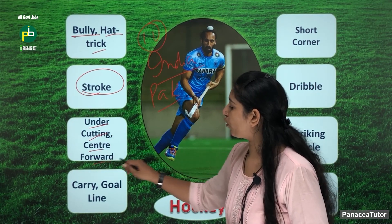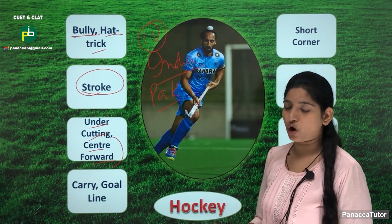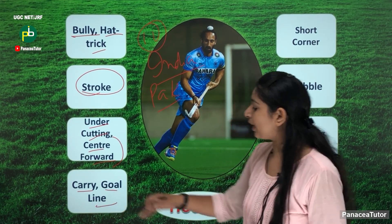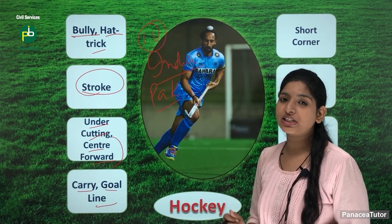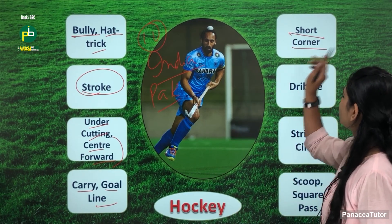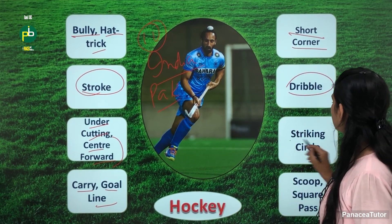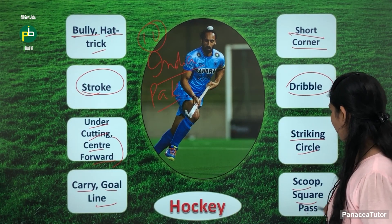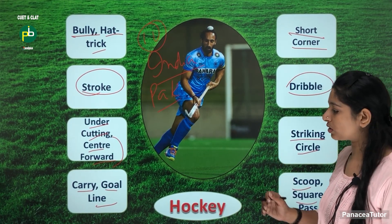Undercutting and center forward — center forward is a position in the hockey ground. Carry and goal line — goal line is the particular line that marks the goal. Short corner, dribble, striking circle, scoop and square pass — all these terms are associated with hockey.